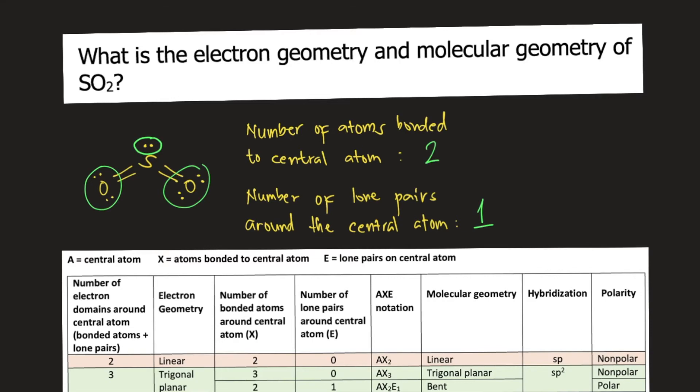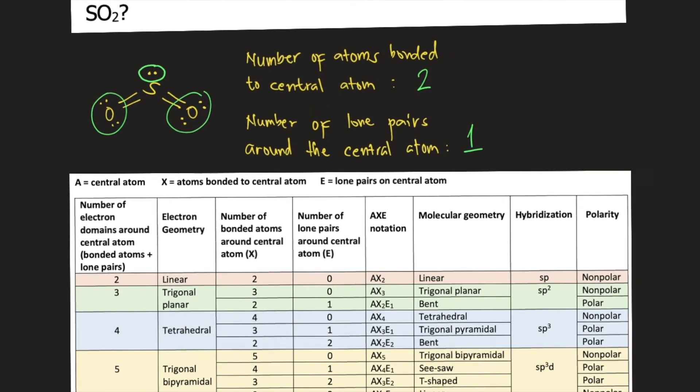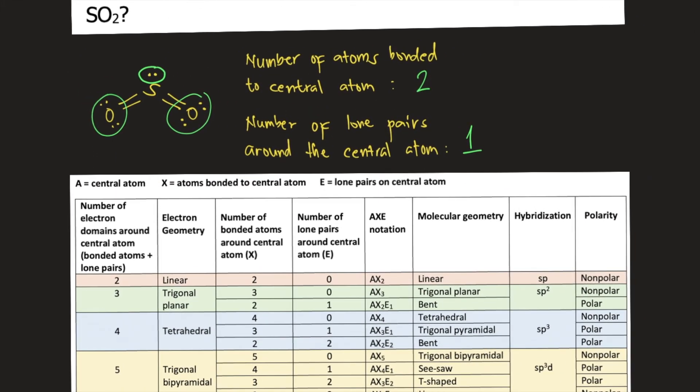Below the structure, I have attached a table that summarizes electron geometry and molecular geometry. Let's look for the number of bonded atoms around the central atom and the number of lone pairs around the central atom.